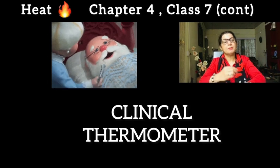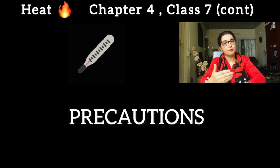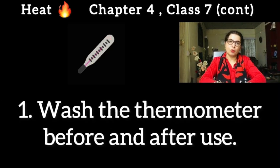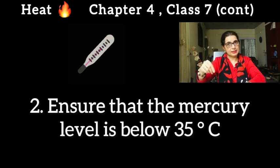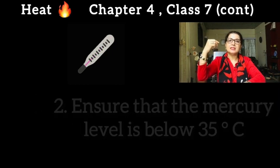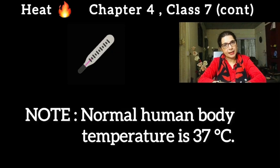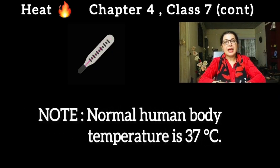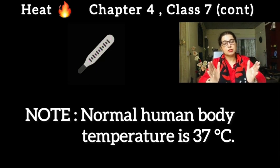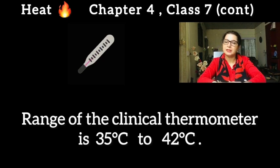The first precaution is that when we use the thermometer, we have to wash it before and after use. The second precaution is that we need to jerk it so that the mercury falls below 35 degrees centigrade, ensuring the measurement starts accurately. Our normal human body temperature is 37 degrees centigrade, and the range of the clinical thermometer is 35 degrees to 42 degrees centigrade.